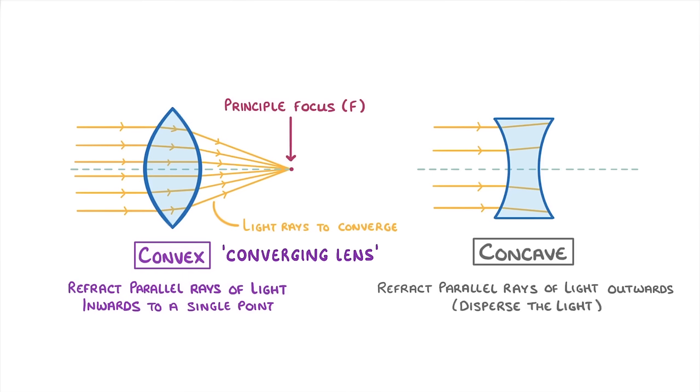To figure out the direction that they'll be refracted in we have to trace virtual lines from the lens's principal focus to where the rays hit the lens. And then if we continue these lines it shows us where the real rays will go.